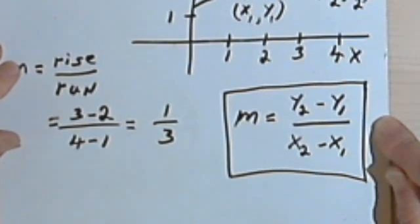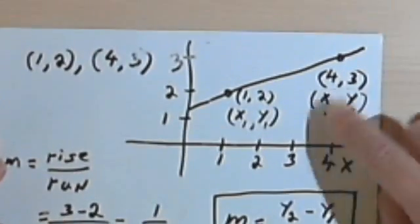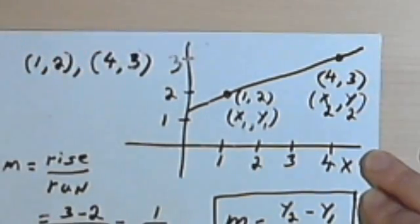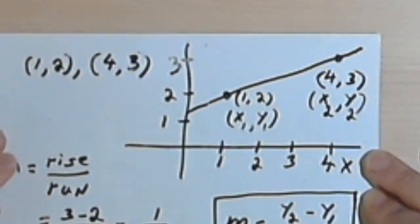Now, once you understand this general formula, you don't have to write the whole graph anymore. We can do it just from the ordered pair. So let's start again.